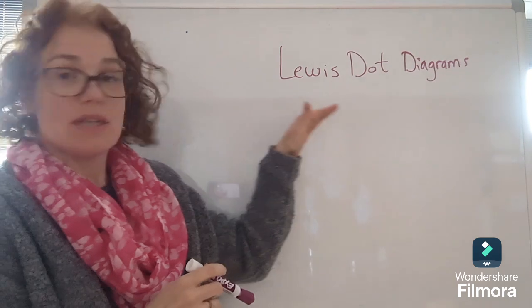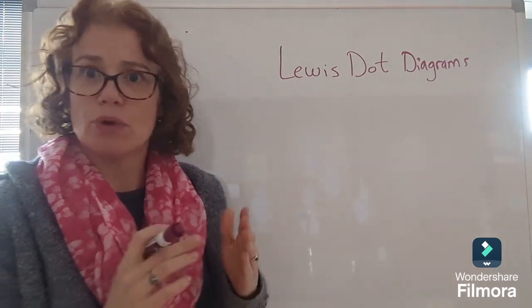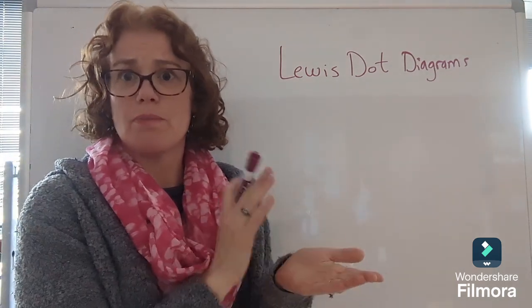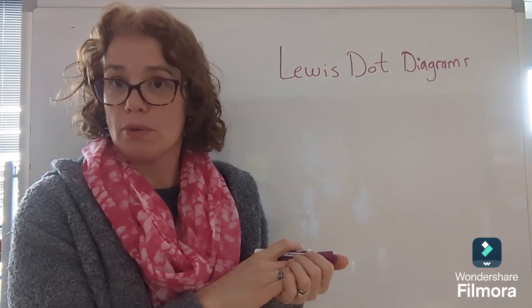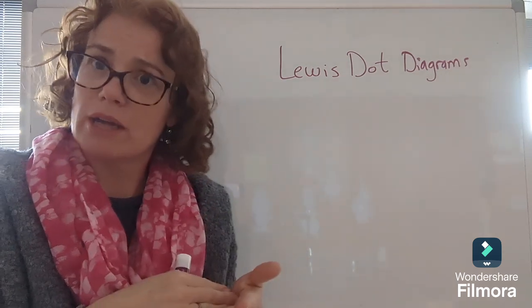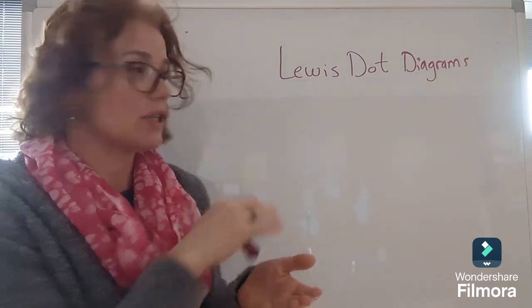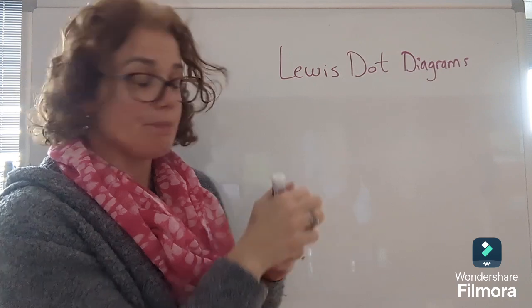A Lewis dot diagram is a much more simplified and easier to use model than the Bohr model. We're going to start talking about the Bohr model first to understand where the Lewis dot diagram comes from.